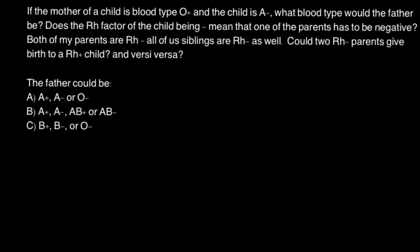Before I show you how to solve this problem, I want to remind you what phenotypes and genotypes we have considering the ABO blood group system. Blood group A can be made by two genotypes: AA and AO.